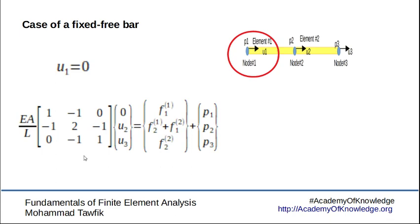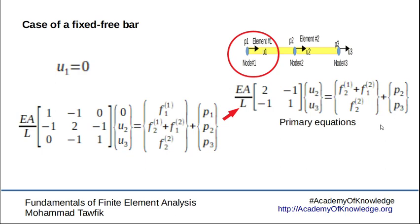As a matter of fact, this equation is not redundant. This is what we're going to be calling the auxiliary equation. First, we get the primary set of equations which include u2, u3, the unknown values.